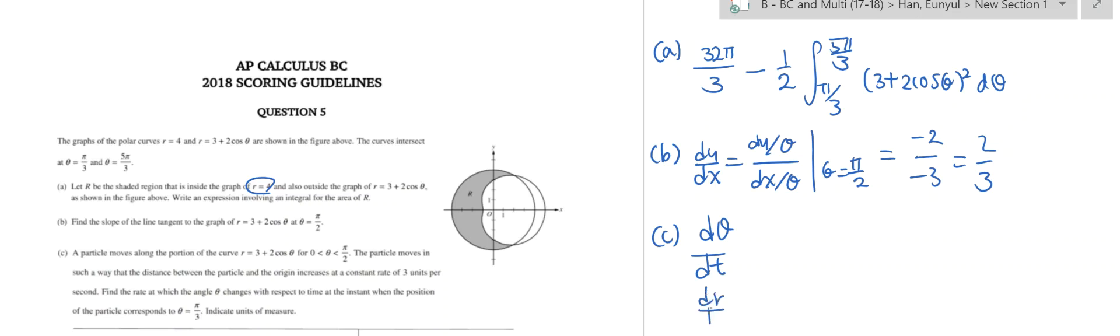We're given that dR/dt equals 3, and we also know that 3 equals negative 2 root 3 over 2 times d theta/dt. And so we can conclude that d theta/dt equals negative 3 over root 3, which is basically negative root 3. And then we have to also indicate the units of measure, which is going to be radians per second.